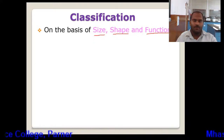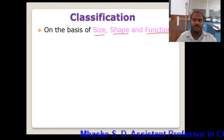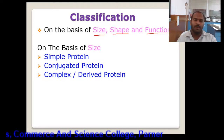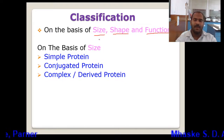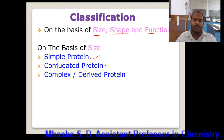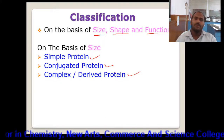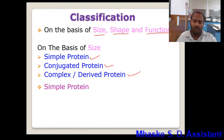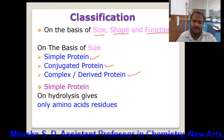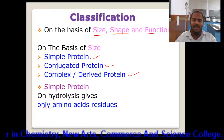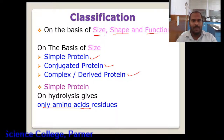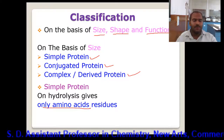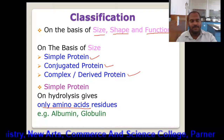On the basis of size, they are classified into three classes: simple protein, conjugated protein, and complex or derived protein. Let's consider the first, that is simple protein. These are the proteins which, on hydrolysis, yield only amino acids. So only amino acids are present in these proteins. All the polypeptide chains are present in these proteins. On hydrolysis, they only yield amino acids. The example is albumin and globulin.